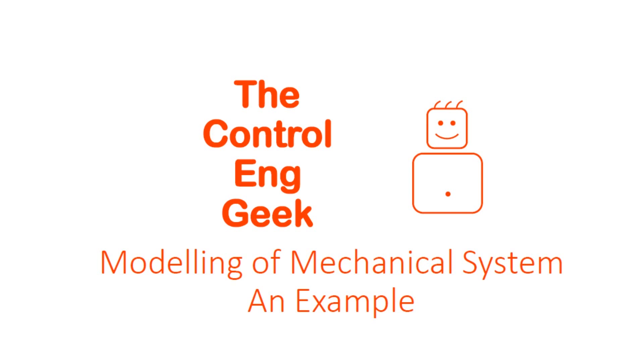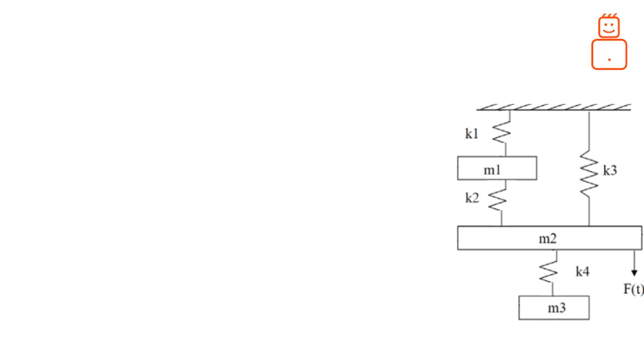Let's start. We have this system here with three blocks: M1, M2, and M3. We have the input force f(t) that affects block M2. Let's add appropriate coordinates for the system.